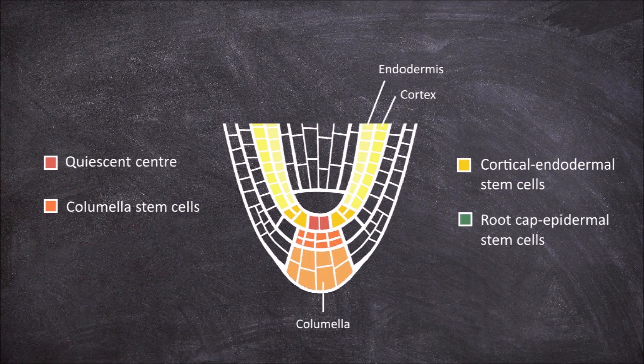The next region is the root cap epidermal stem cells. These stem cells form a ring around the columella stem cells. The stem cells of this region undergo anticlinal cell division to form the epidermal layer.